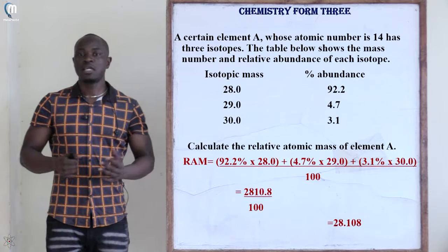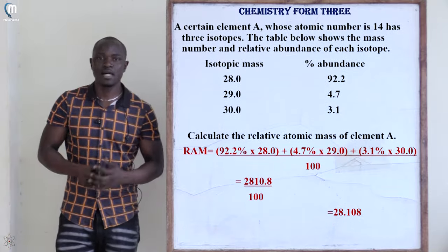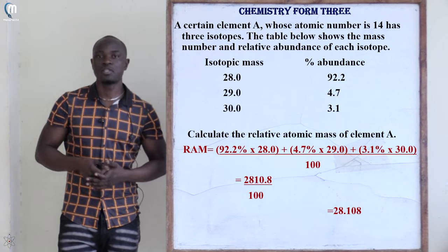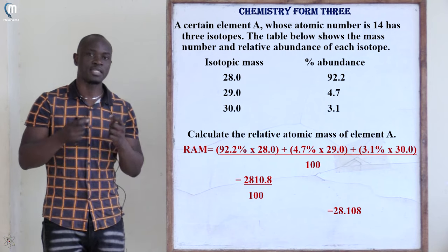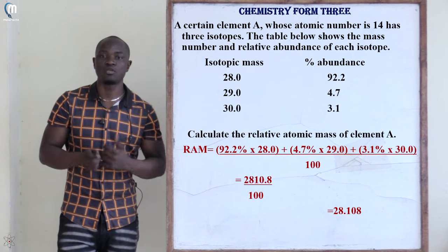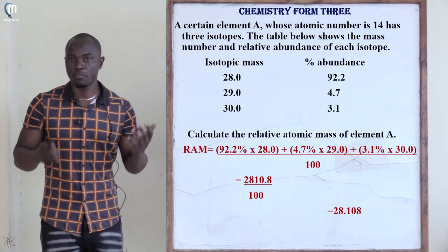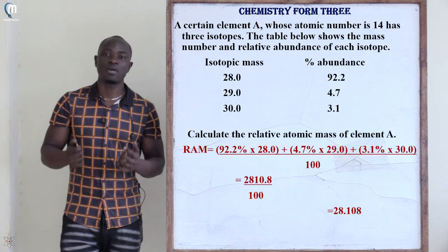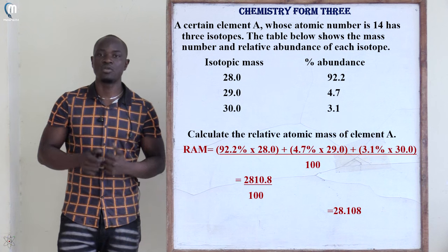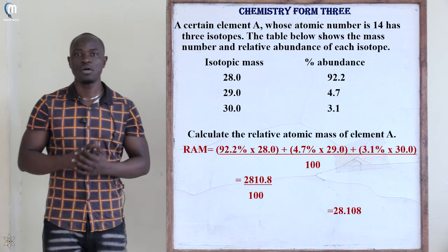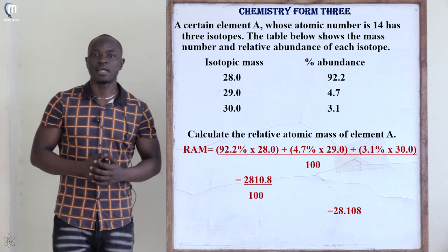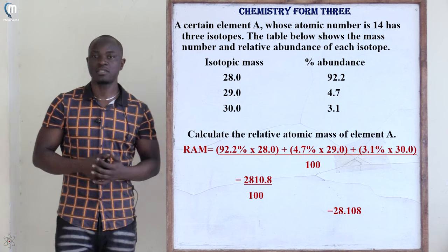The next question states: a certain element A whose atomic number is 14 has three isotopes. The table shows the mass number and relative abundance of each isotope. The isotopic masses are 28 with an abundance of 92.2%, 29 with an abundance of 4.7%, and 30. Calculate the relative atomic mass of element A.